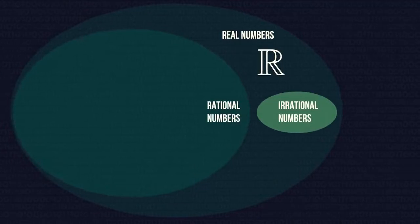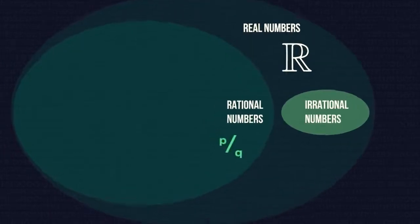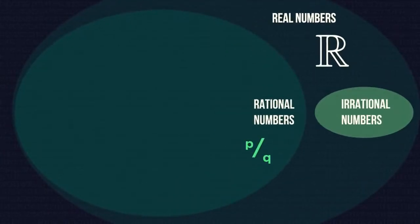Real numbers split into two subsets, rational and irrational. Rational numbers can be written as a fraction. I just remember, rational, fractional sound similar.